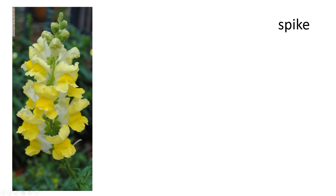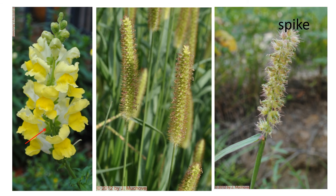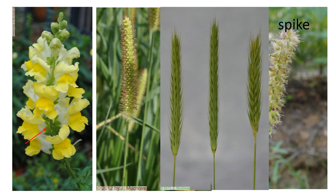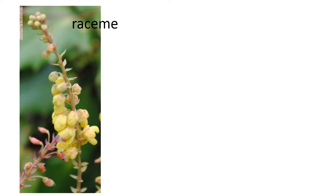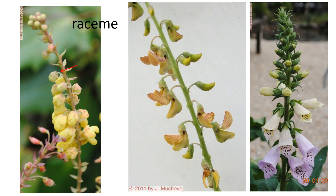A spike is a grouping of single flowers on a stalk where the flowers are sessile — they sit directly on the stalk. A raceme is like a spike, but now the flowers sit upon a small secondary stalk.